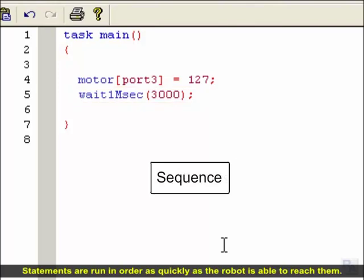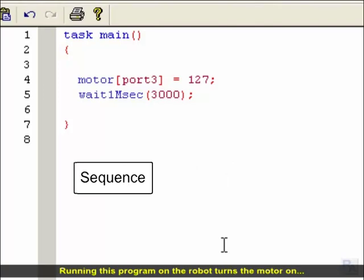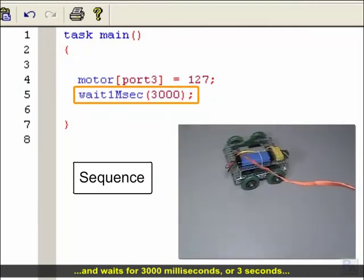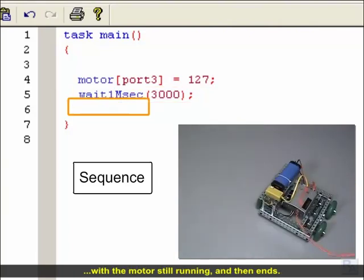Statements are run in order as quickly as the robot is able to reach them. Running this program on the robot turns the motor on, then waits for 3000 milliseconds, 3 seconds, with the motor still running, and then ends.